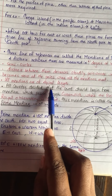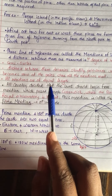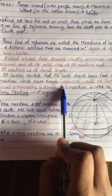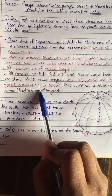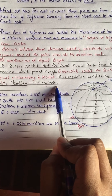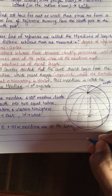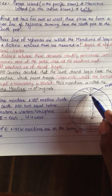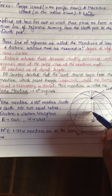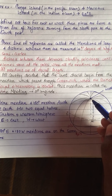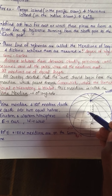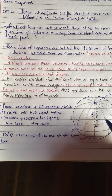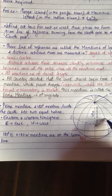Since all meridians are of equal length, it is difficult to define which one to use as the reference — that is, zero degrees. All countries decided that the count should begin from the meridian which passes through Greenwich, where the British Royal Observatory is located. This meridian is called the prime meridian, at zero degrees longitude. The prime meridian also divides the Earth into two halves: the eastern hemisphere and the western hemisphere.